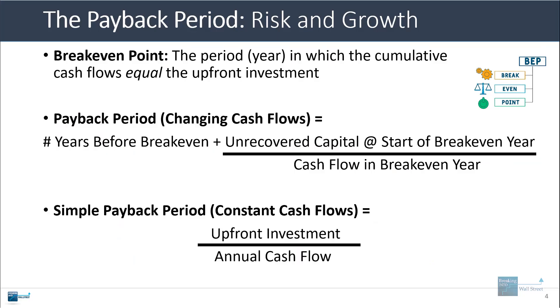If it is a simple case with constant cash flows, then it's very easy — you just take the upfront investment and divide by the annual cash flow. So if it's $1,000 and you get $100 in cash flow per year, the payback period is 1,000 divided by 100, or 10 years.